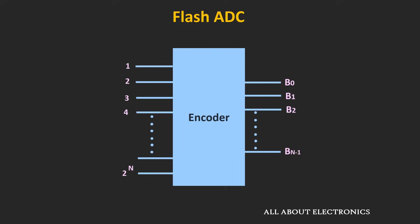For those who are not aware about the encoder, it is a combinational circuit which has a total of 2 to the power n inputs. At any given time, if only one input is high, it gives the n-bit binary code corresponding to that input. For example, if the second input is high, the encoder gives the binary code corresponding to the second input. But in this encoder, if more than one input is high simultaneously, there is ambiguity in the output.